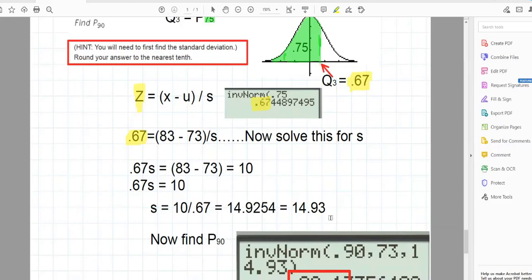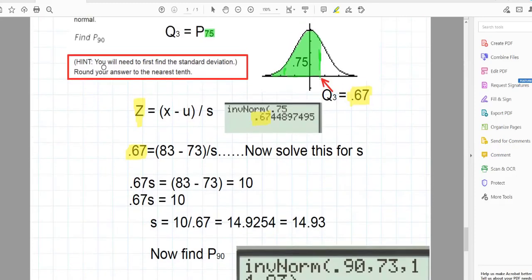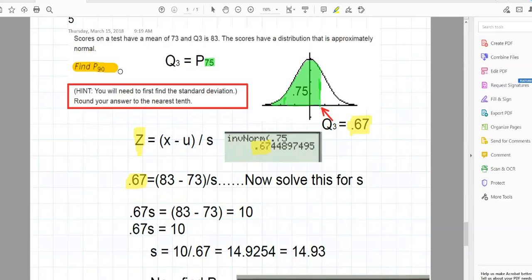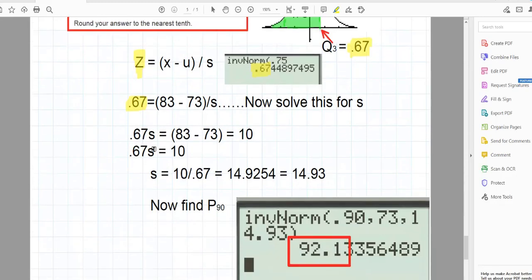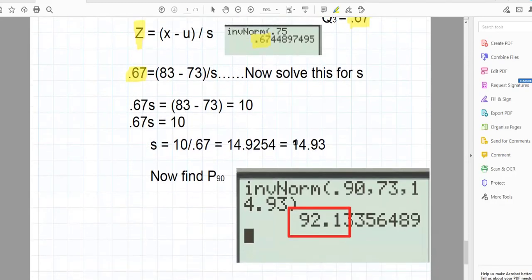Now, with this standard deviation, now we can go ahead and find p-subscript 90. Remember, we did all of this because we wanted to find p-subscript 90. But to find p-subscript 90, which is the 90th percentile, the area to the left is 90, and we need to know the mean, which is 73, and we also needed the standard deviation. To find p-subscript 90, now that you have the standard deviation as 14.93, it's a pretty simple matter to find the 90th percentile.